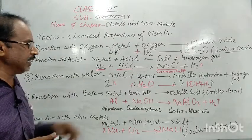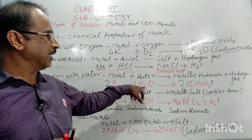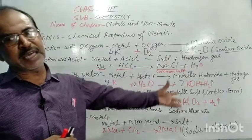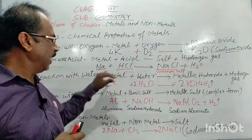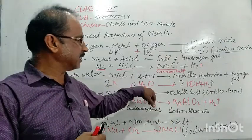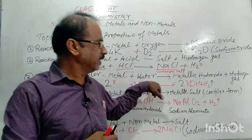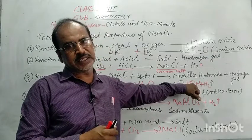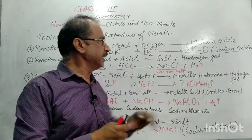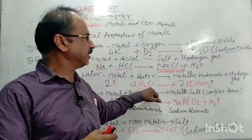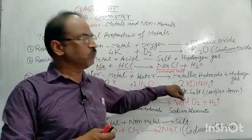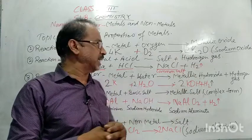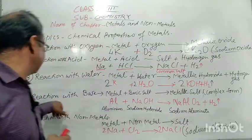You saw that when sodium reacts with water, sodium hydroxide is formed. If we use potassium instead, potassium hydroxide is formed. That is, commonly, metal reacts with water to form metallic hydroxide.